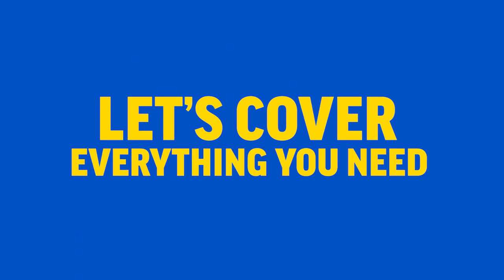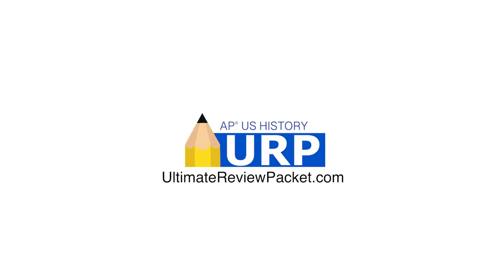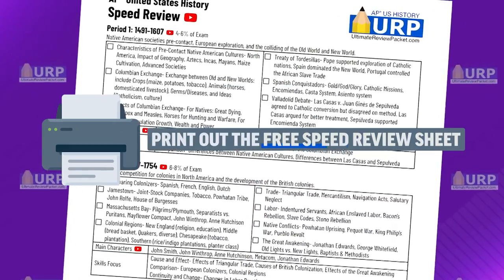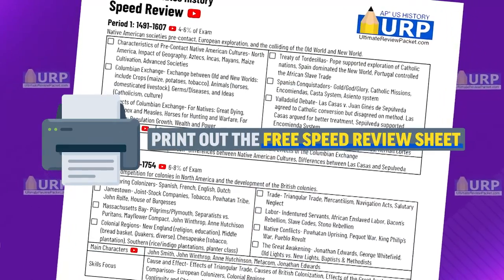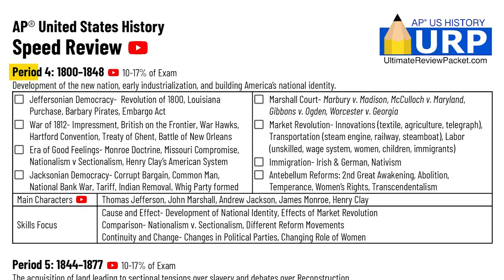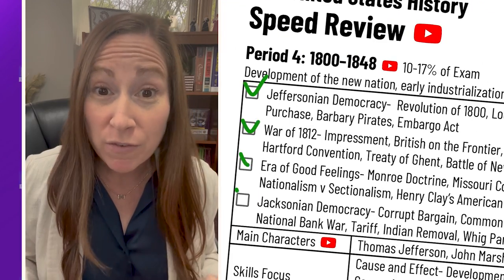Hey AP US History students, let's cover everything you need to know for the exam for Period 4. Before we start, print out the speed review sheet to help you follow along with this video — it's free and you can find the link in the description below. Look at Period 4 and circle any people, events, or vocab that you might not quite remember and need to focus on as we review. Once you're confident you've mastered a topic, you can check it off and move on.